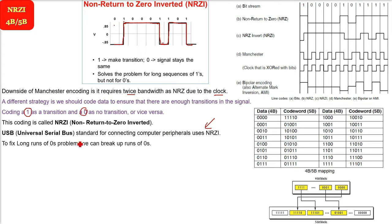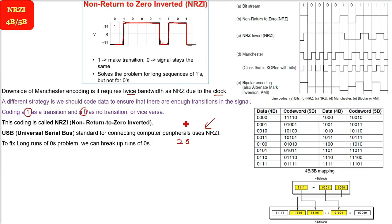Now, in order to fix long runs of zeros, what can we do? We have multiple solutions. We can divide or break up these long runs of zeros. It can be 50, 40, or 20 zeros. We can divide, say, 20 zeros into groups of 5 zeros or 4 zeros. This can be a solution.